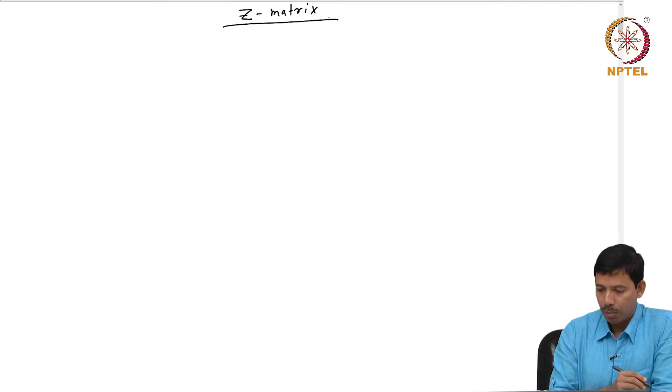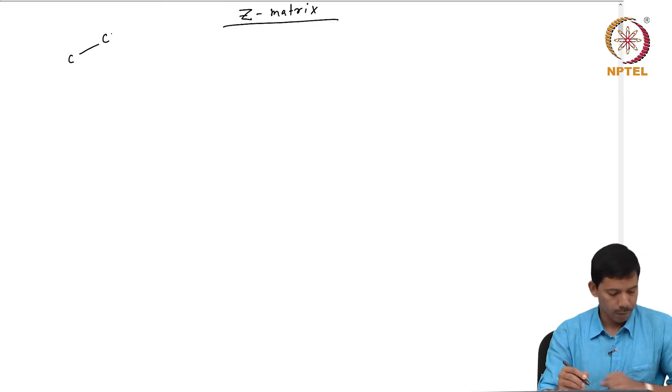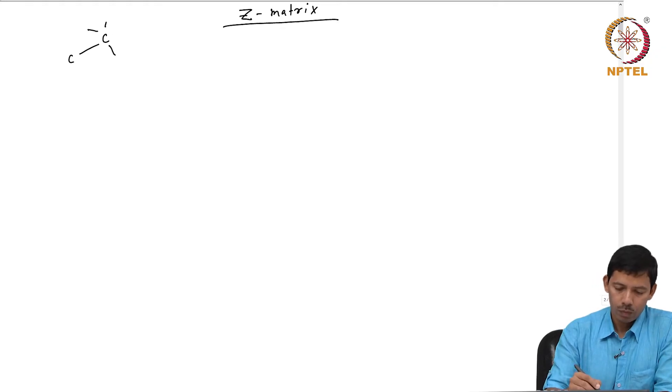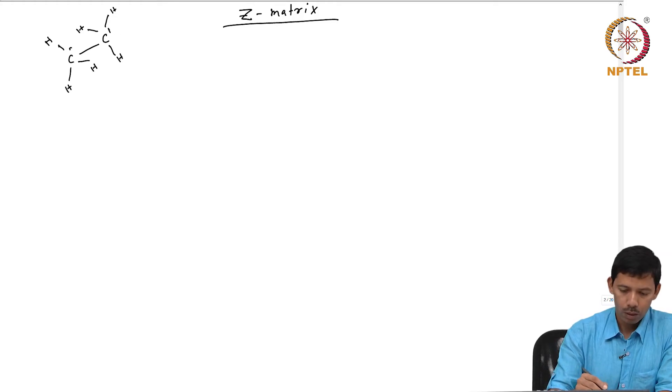Let us say I am taking the example of ethane. Ethane has carbon, another carbon, CH3 here and CH3 here. I will just name them as 1, atom 2, atom 3, atom 4, 5, 6, 7 and 8.